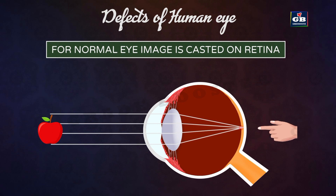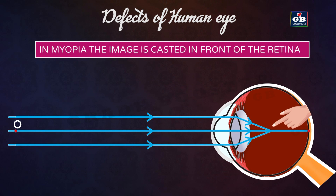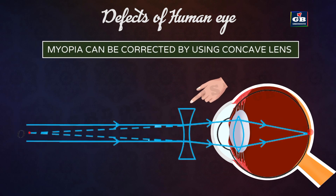When the image of an object is cast on the retina, we can see it clearly. In myopia, however, the image is cast in front of the retina, leading to blurry vision. This can be corrected by using a concave lens, which makes the image fall on the retina so the myopic person can see far objects clearly.